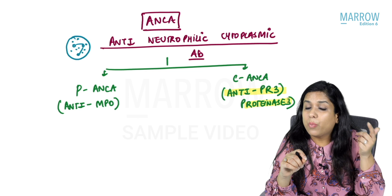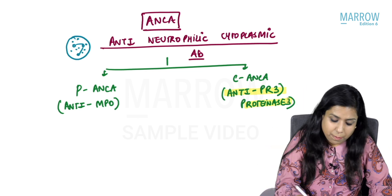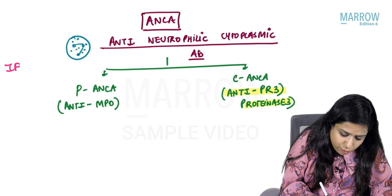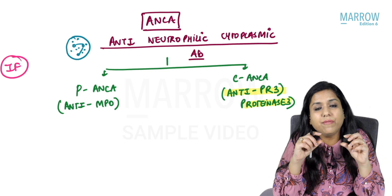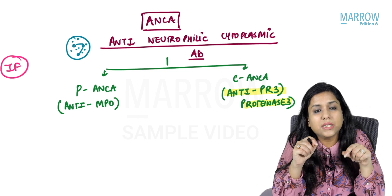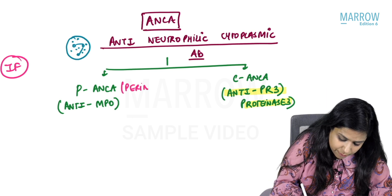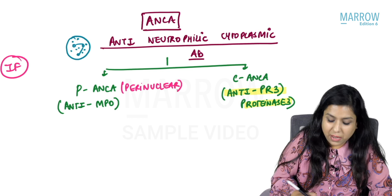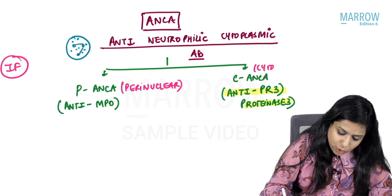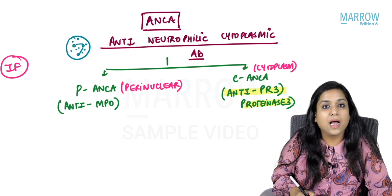Why do we call them PANCA or CANCA? When you do immunofluorescence to see these ANCAs, if the staining is in the perinuclear location — P means perinuclear — I call it PANCA. If the cytoplasm is stained, I call it CANCA.